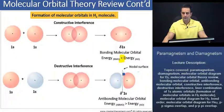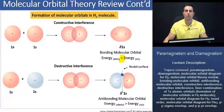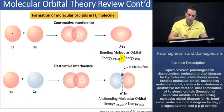Recall what we had stated about nodes. Nodes are a region in an orbital where there is zero electron probability.